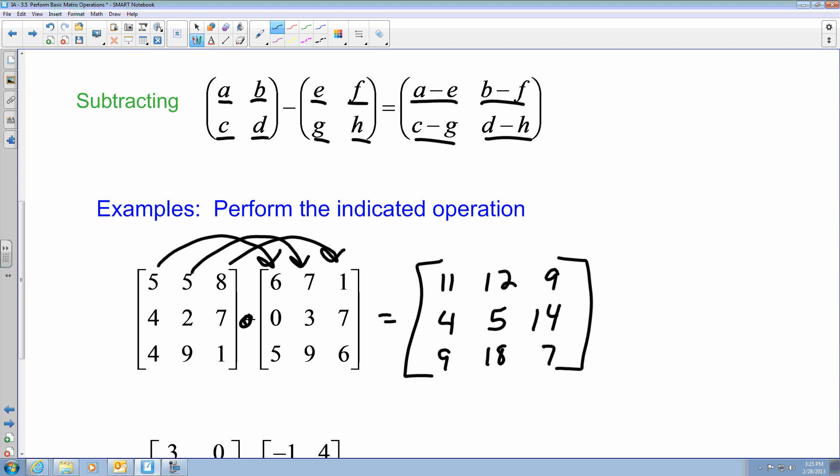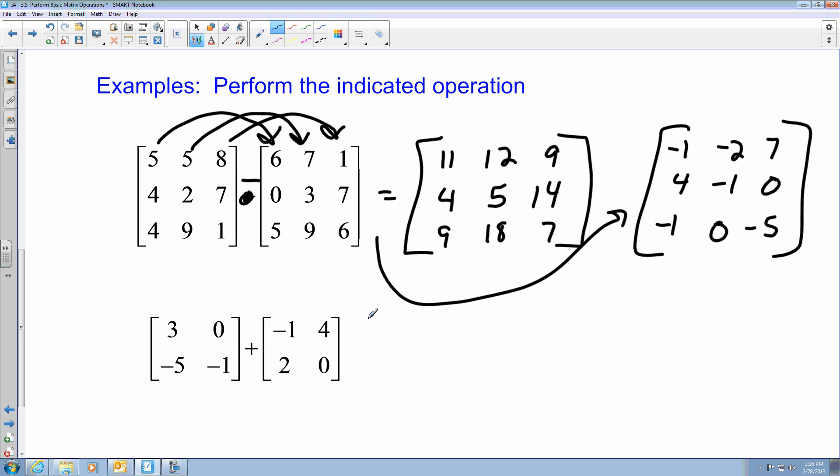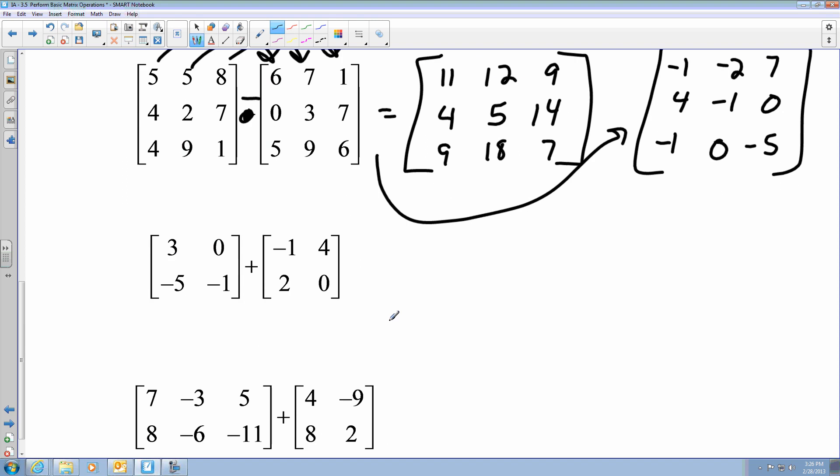But let's say for instance, let's say that this was a subtraction problem. So now I am going to get a new result for my subtraction. I would get negative 1, negative 2, 7. I would get 4, negative 1, 0. In the last row, I would get negative 1, 0, negative 5. So again, this is just using those operations to help you add or subtract.